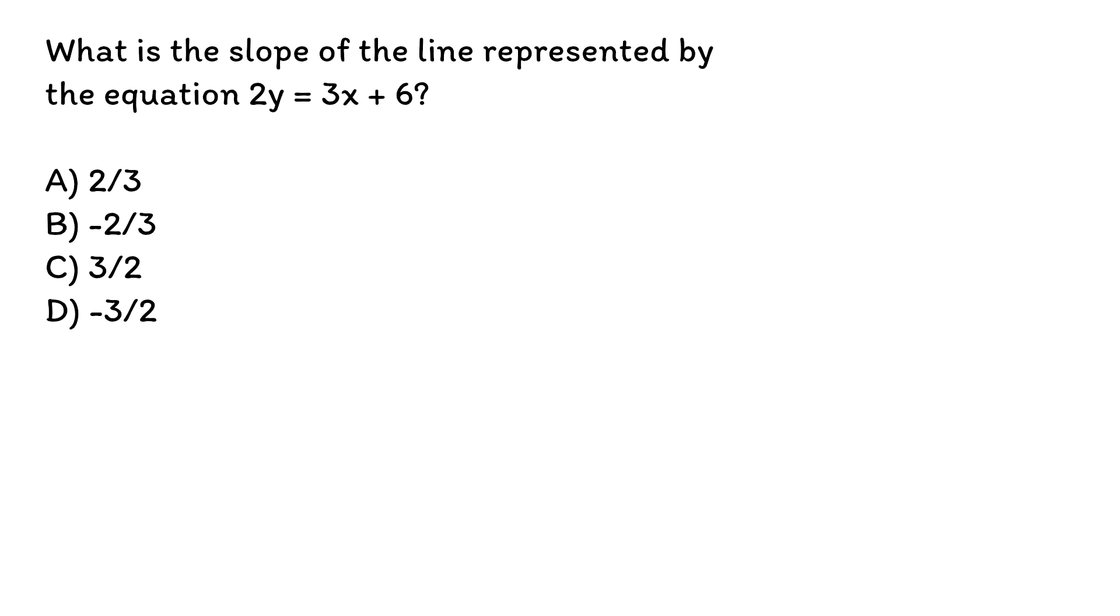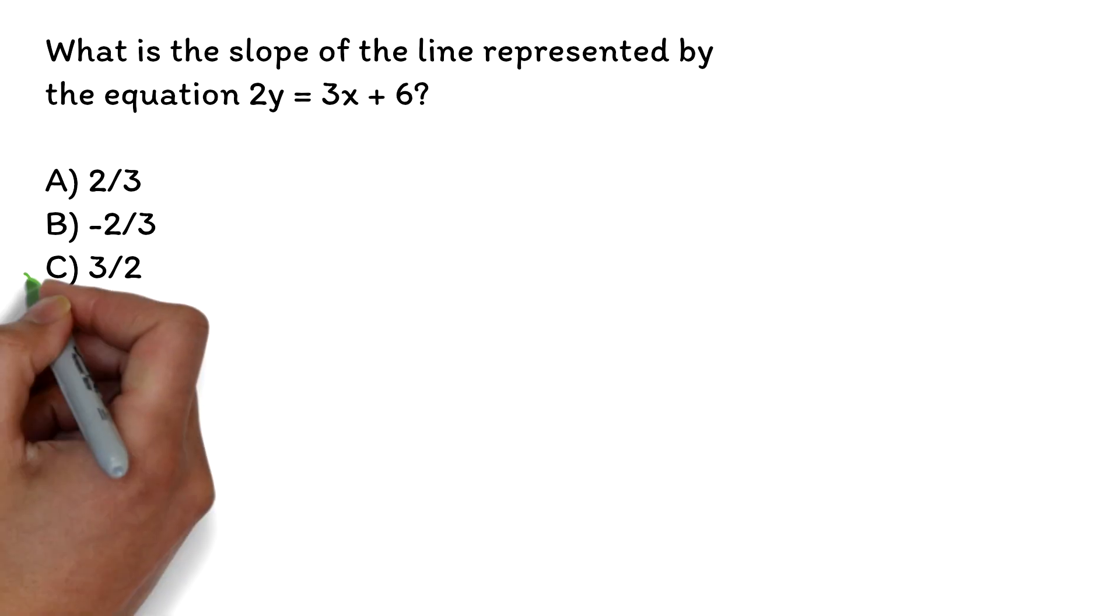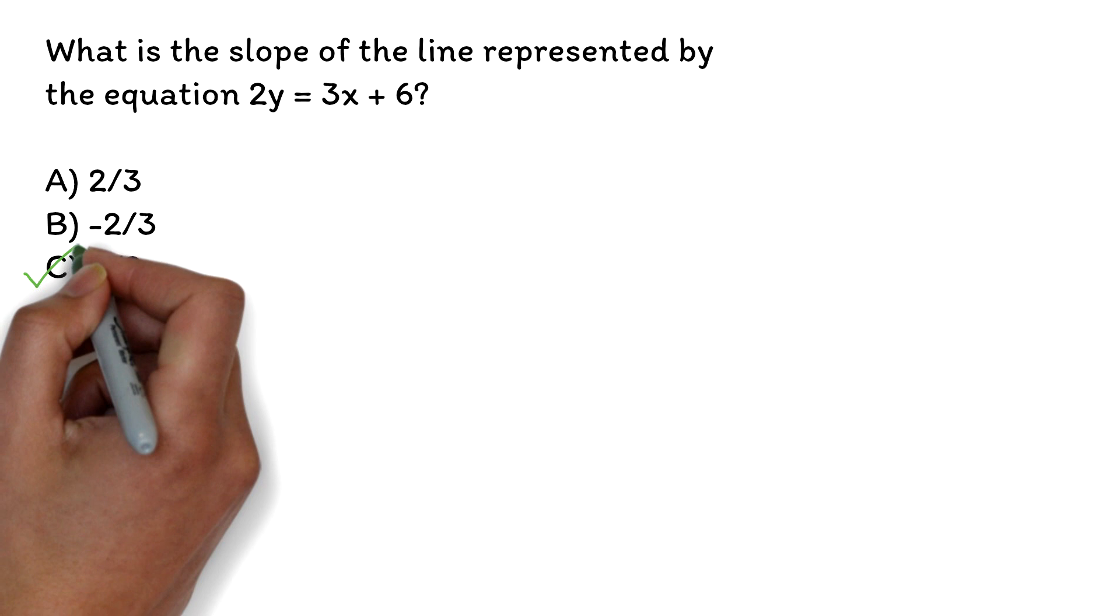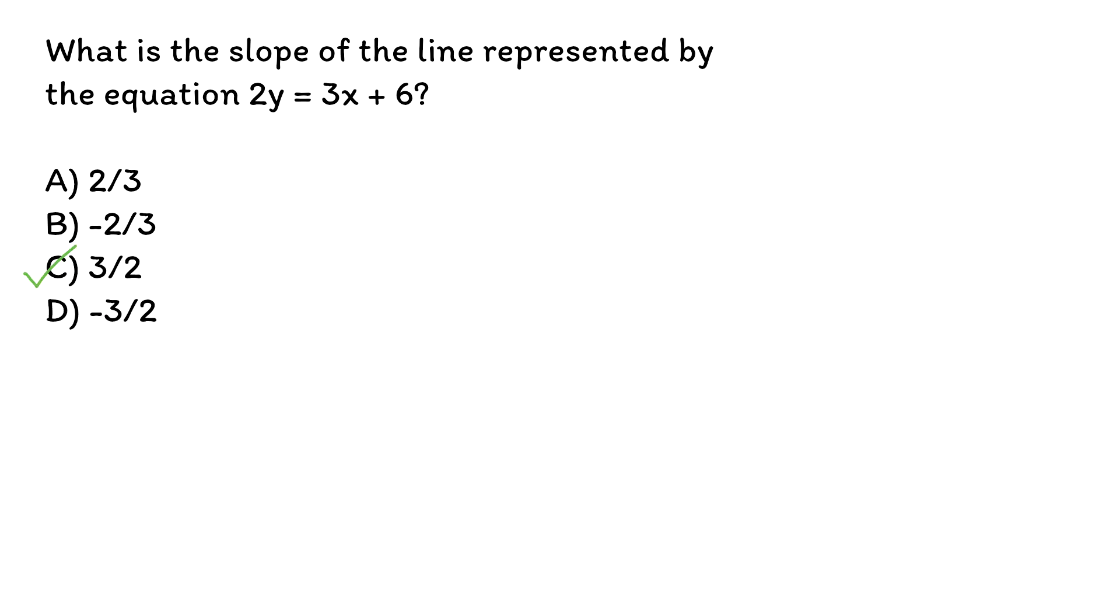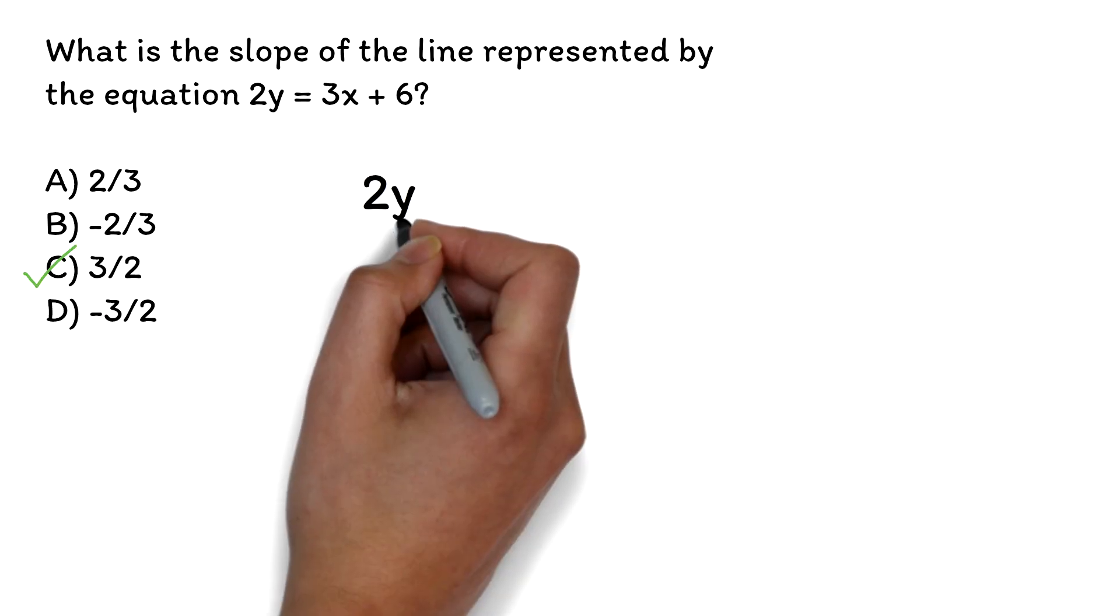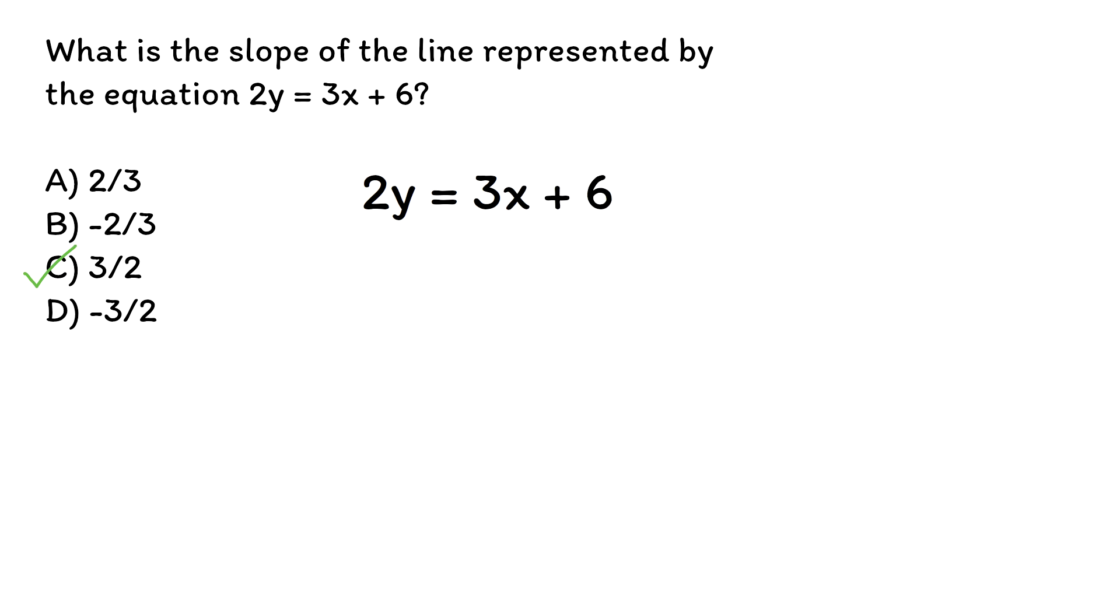What is the slope of the line represented by the equation 2y equals 3x plus 6? A. 2 over 3, B. Negative 2 over 3, C. 3 over 2, D. Negative 3 over 2. The correct answer is C, 3 over 2. This is similar to the previous question, but you have to be careful.